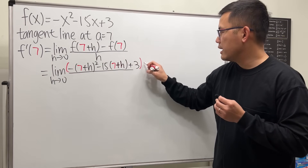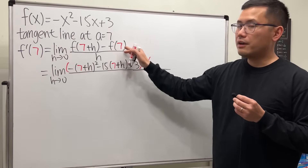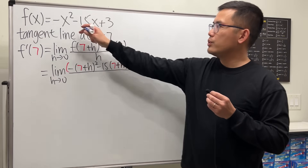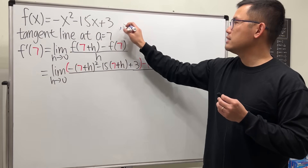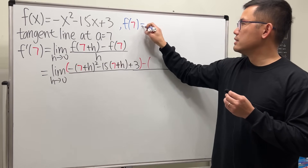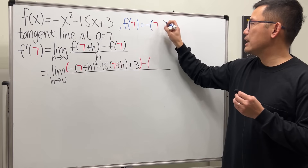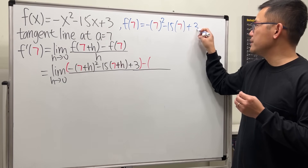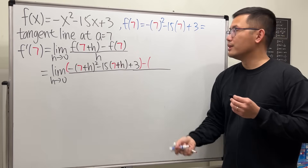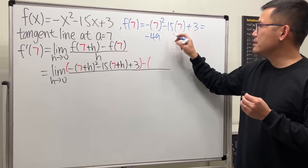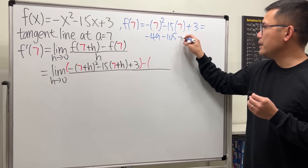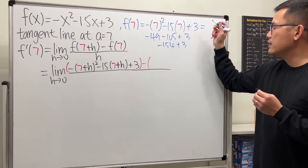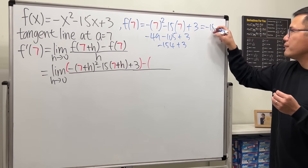Then we are going to subtract f(7). For f(7) we just put 7 into all the x's. So f(7) is: negative (7 squared) minus 15 times 7 plus 3. That's negative 49, minus 105, plus 3, which gives us negative 154 plus 3 — so altogether negative 151.